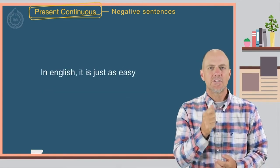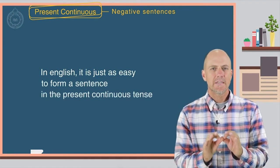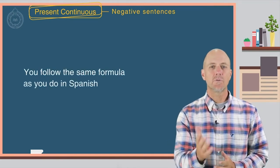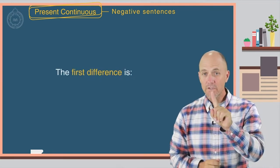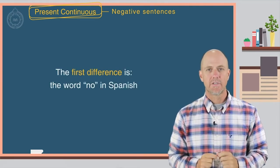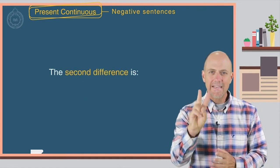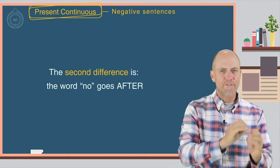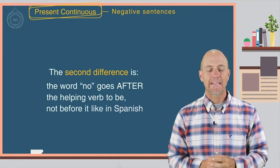In English, it is just as easy to form a sentence in the present continuous tense. You follow the same formula as you do in Spanish with two differences. The first difference is the word no in Spanish is not in English. The second difference is the word not goes after the helping verb to be, not before it like in Spanish.